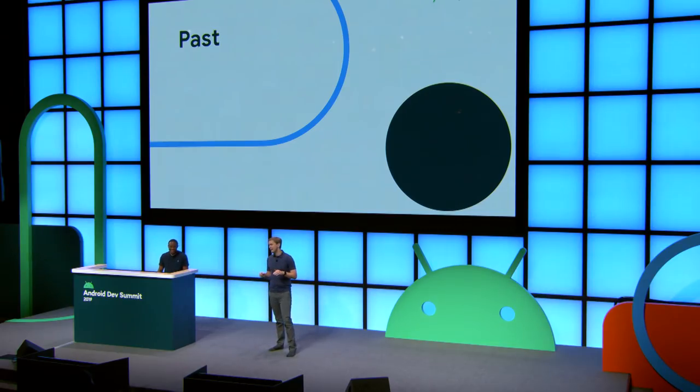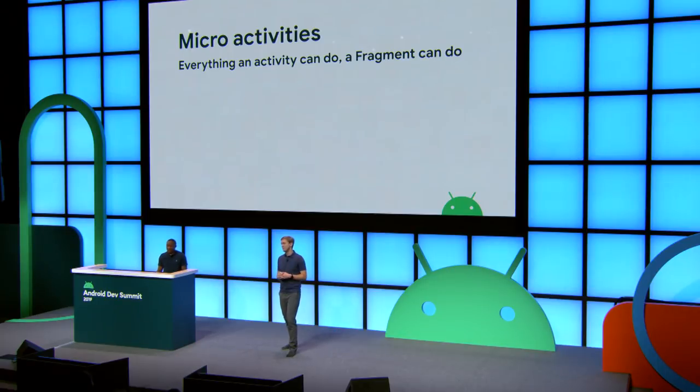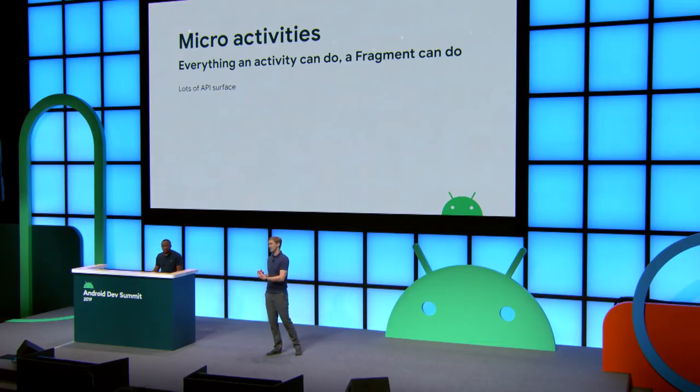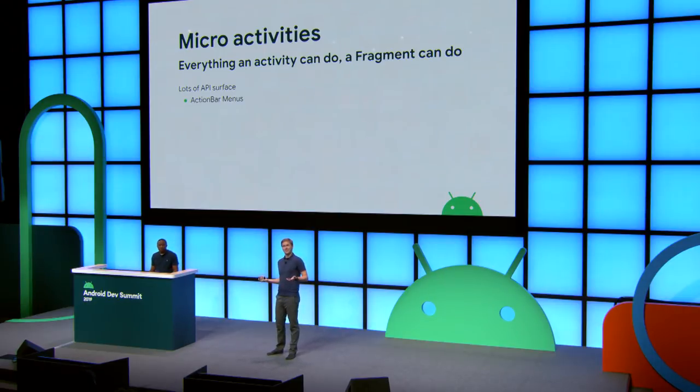Starting with the past, fragments were introduced in Android Honeycomb, API 11. They were originally designed to be micro-activities — that very first step into moving code out of your activity into something smaller. But that also meant we inherited a lot of the API surface inherent in Activity, including things like action bar menu stuff, because there wasn't something called Toolbar yet, and context menus — does anyone actually use context menus anymore?